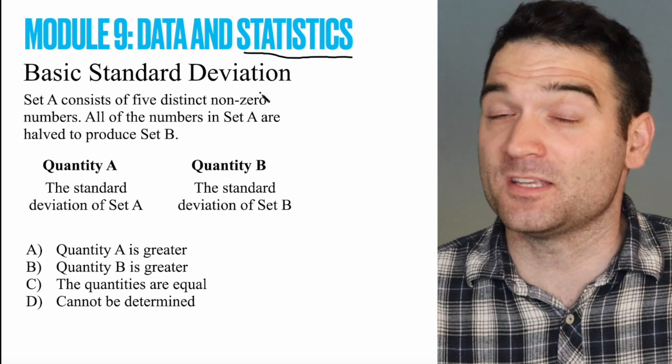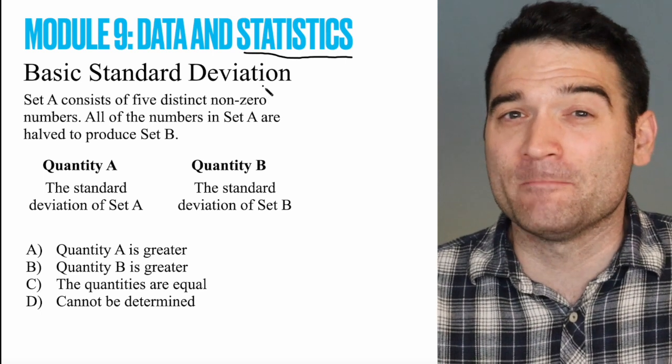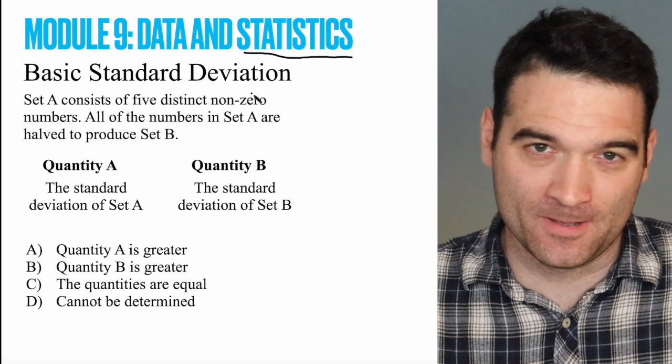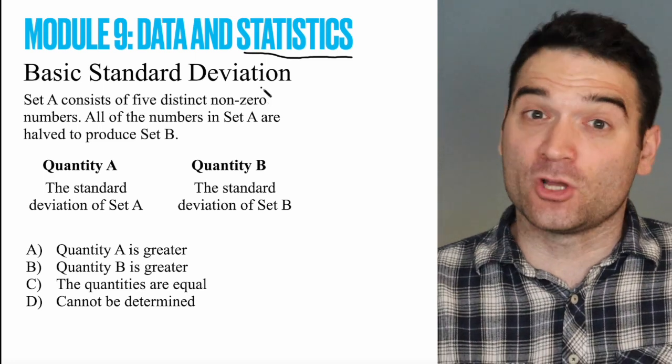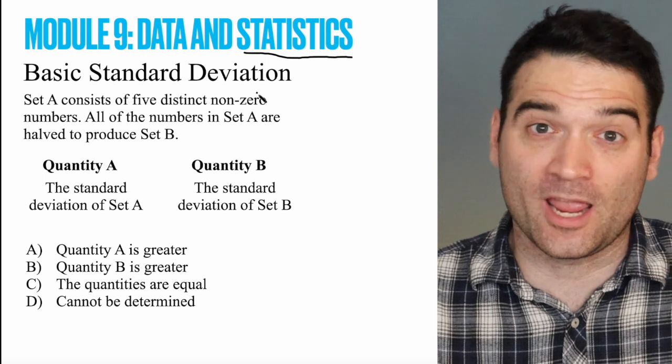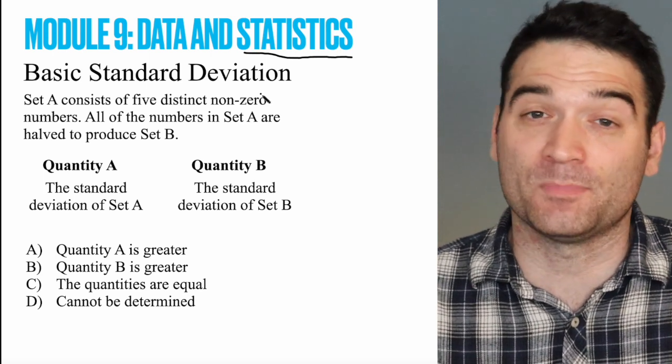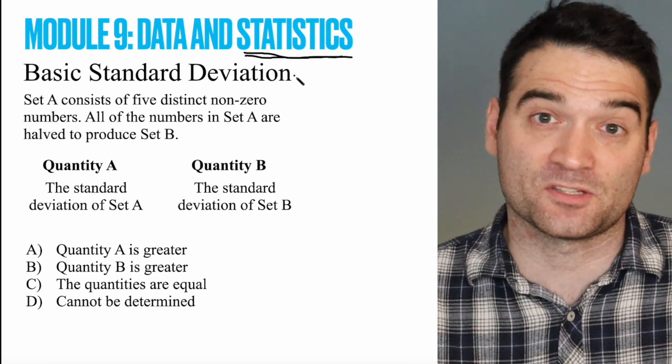There will be statistics questions on the test, and they will be pretty hard. But you're probably only going to get one, maybe two of them per section. That's it. So if you're going for a very high score, you're aiming for a top MBA program, and you need something in the 160-plus zone, it's important to understand these question types, the statistics questions.